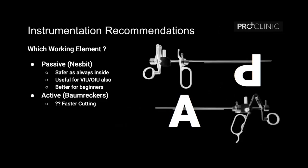Then coming to the working element — there are two types: a passive working element, which we call the nested type, and an active Baumrucker type. The advantage of the passive type is that when you are not handling the working element the loop will always remain inside the sheet — it is a safer version and can also be used for optical use. It's better for beginners; about 90% of people may be using the passive working element. The advantage claimed with the active working element is that it is a little faster to cut because you are doing active cutting.